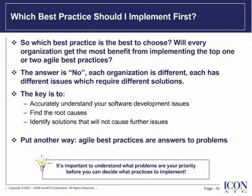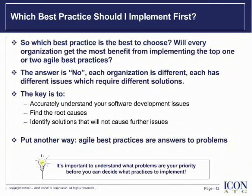Which best practice should I implement first? I'm often asked that question, or I'm asked, will every organization get the most benefit from implementing the top one or two best practices? Unfortunately, the answer is no. Each organization is different; each has different issues which require different solutions. The key is to accurately understand your software development issues, find the root causes, and identify solutions that will not cause further issues. Agile best practices are answers to problems — so what problems are you experiencing? If you would like assistance, ICON-ATG offers organizational and project assessments to determine your strengths and weaknesses and then creates an iterative adoption roadmap for you.